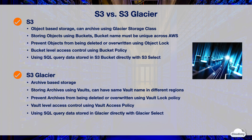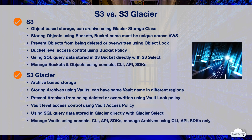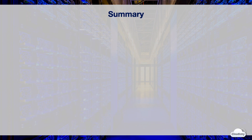You can query data stored in S3 directly using SQL with S3 Select, and query data stored in Glacier using Glacier Select. S3 and S3 Glacier have different consoles, SDKs, APIs, and CLIs. In S3, you can manage buckets, objects, or archived objects using the S3 console, SDKs, API, or CLI. In Glacier, you can manage vaults using the Glacier console or programmatically, but you can only perform operations on archives programmatically.